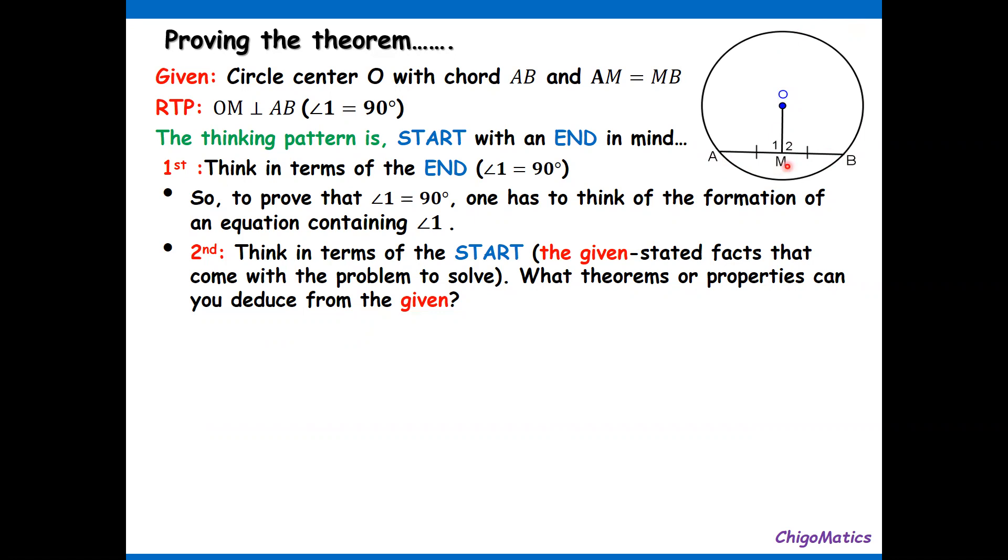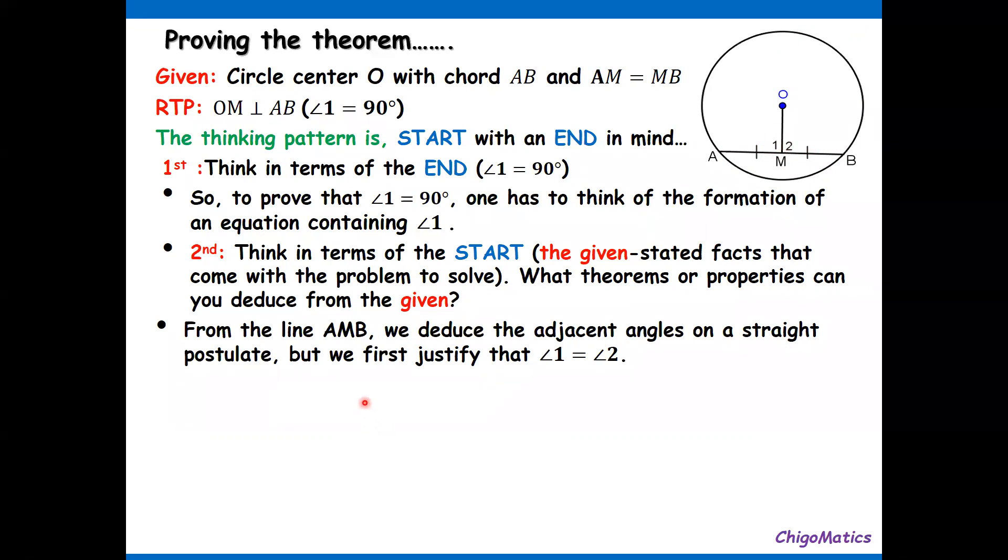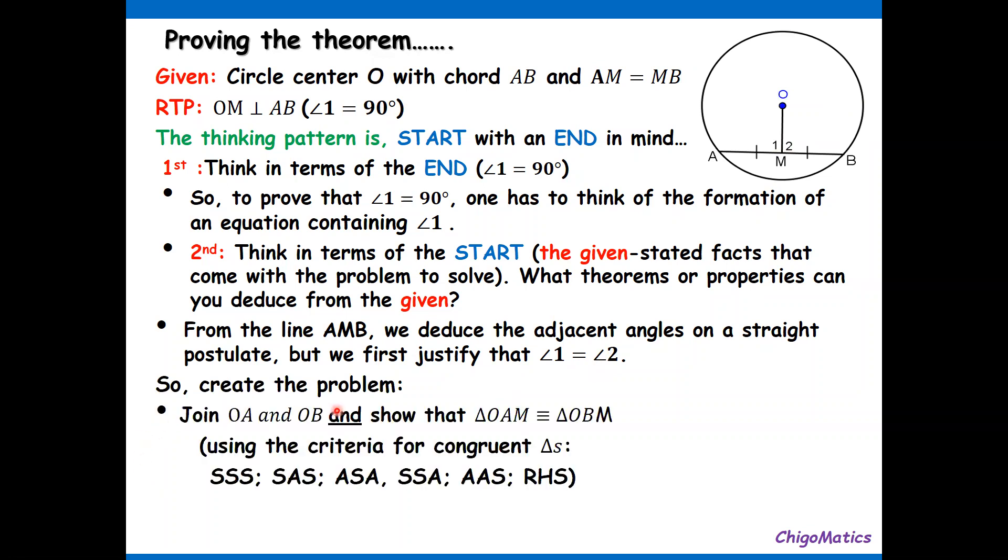That is given. So from the line AMB, we deduce the adjacent angles of a straight line postulate. This is a straight line. We can add the adjacent angles and you know that would be equal to 180. But we first justify that angle one is equals to angle two.